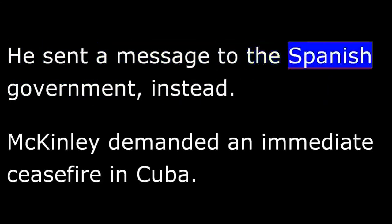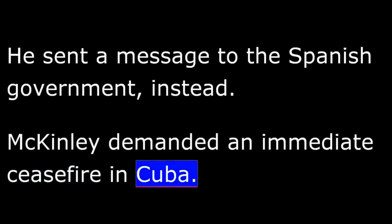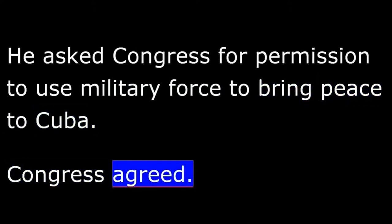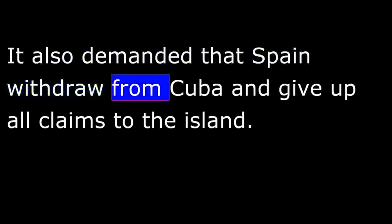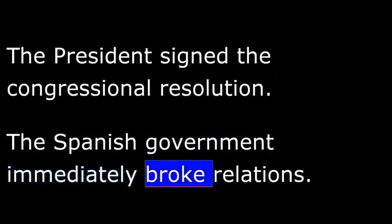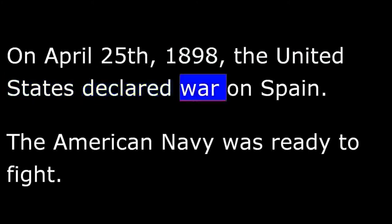He sent a message to the Spanish government instead. McKinley demanded an immediate ceasefire in Cuba and offered his help in ending the revolt. By the time Spain agreed to the demands, McKinley had made his decision. He asked Congress for permission to use military force to bring peace to Cuba. Congress agreed and demanded that Spain withdraw from Cuba and give up all claims to the island. The president signed the Congressional Resolution. The Spanish government immediately broke relations. On April 25, 1898, the United States declared war on Spain.